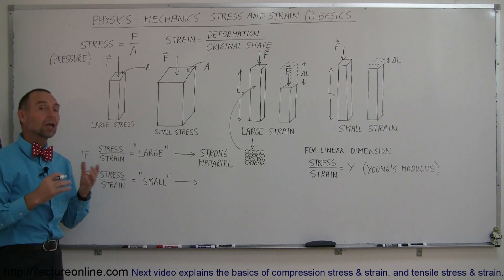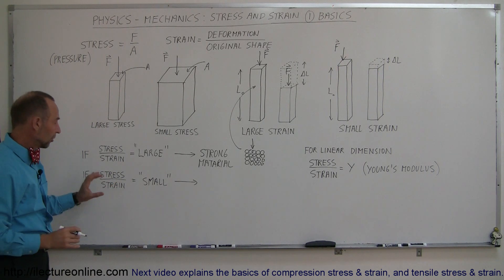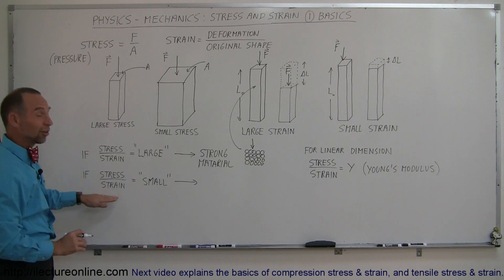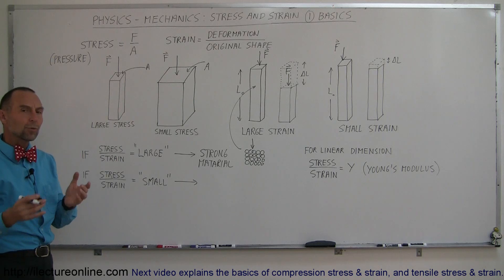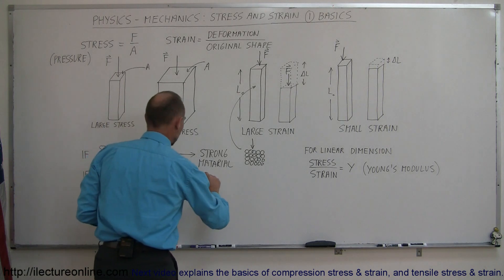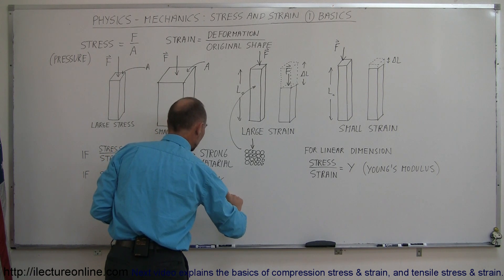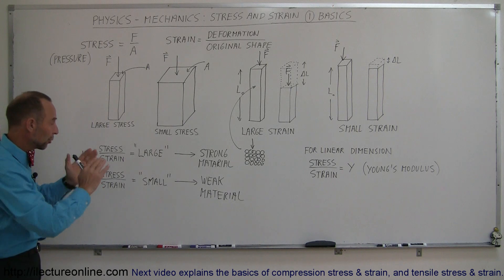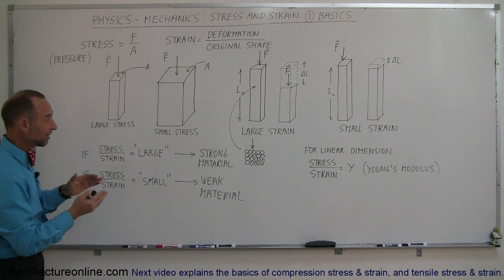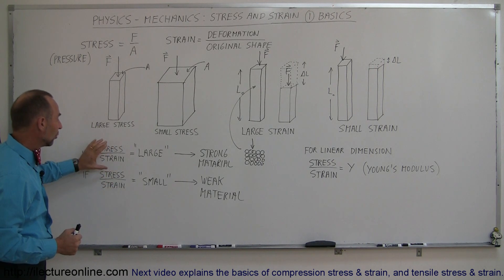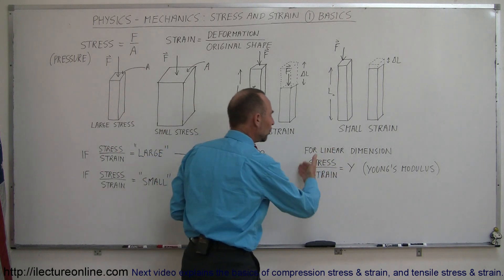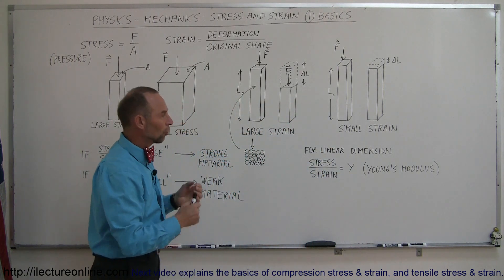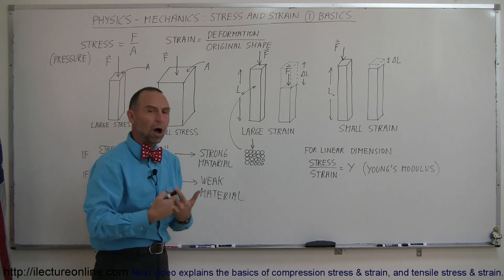On the other hand, if we apply not a lot of stress — not a lot of force — and the strain is considerable, then that ratio is small, and we're dealing with a very weak material, one that very easily compresses. Since this ratio of stress divided by strain — where stress is like pressure, how much force per unit area, divided by how much deformation relative to the original shape — gives us a measure of the material, we call this ratio the Young's modulus. The Young's modulus is an indication of how strong or how weak the material is.